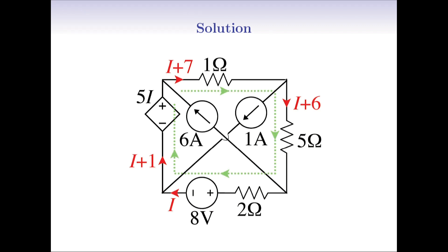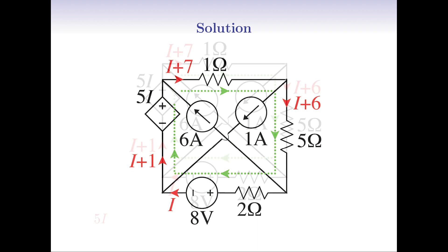Now, we realize that we can form a loop with only one unknown variable. So we can write the KVL for this loop to find I. We start from the left edge which contains the dependent voltage source, and we circle clockwise. Because we are entering the dependent voltage source from the negative end and we exit the source from the positive end, we feel the increase in the voltage difference. So in writing KVL we start with plus 5I.